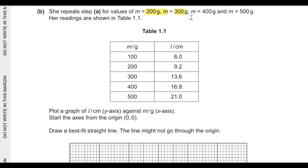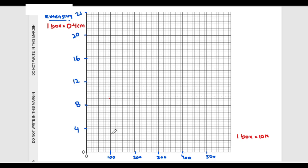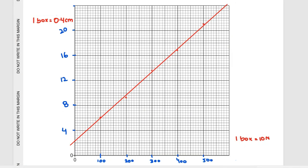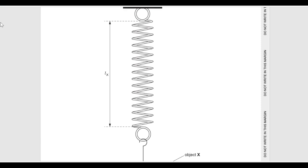Part B says she repeats step A for values 200g, 300g, 400g, and 500g. Her readings are shown in the table, where L is the stretched length of the spring. We plot a graph of stretched length on the y-axis against mass on the x-axis, starting from the origin. On the y-axis one box represents 0.4 cm, and on the x-axis one small box represents 10 grams. I've plotted the values and drawn a best-fit line.